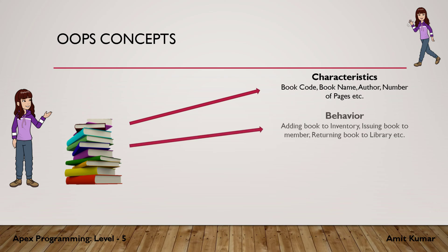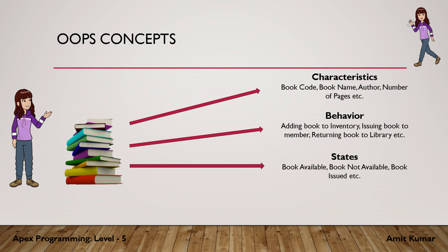There will be some certain behaviors of a book like adding a book to inventory, issuing a book to members, or returning a book to the library. Each book will have certain states — the book is available, not available, or already issued to a member. And each book will have a unique identity, for example, book code.